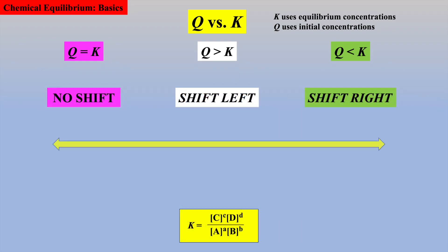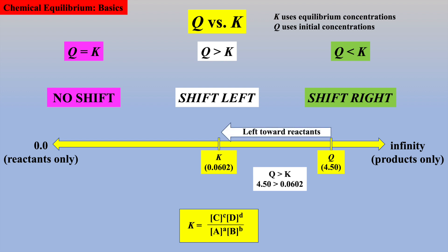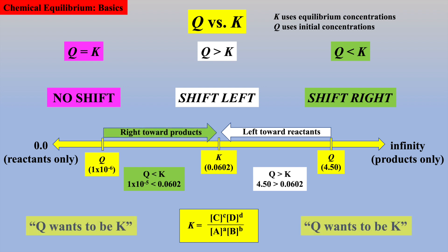Alternatively, one could imagine a number line to represent all values of Q and K, with 0 on one end because there are no products — just reactants — and infinity on the other end because there are no reactants, just products. Using the values for Q and K from the last example, we approximate where the given K and the calculated Q will be on this number line. Because Q is greater than K, we see that Q has to shift to the left toward reactants. If Q were 1×10⁻⁶, which is less than K, then the shift would be to the right to form more products. Remember, Q will strive to have the same value as K.